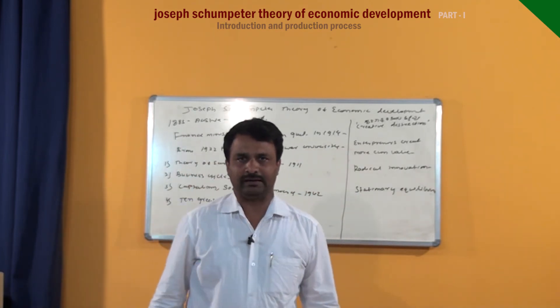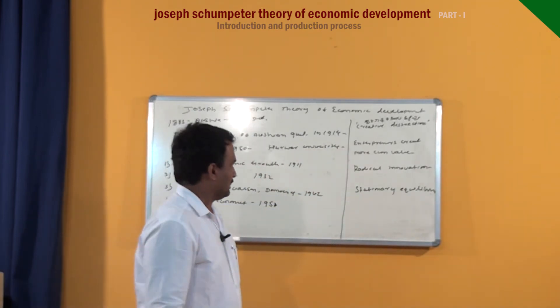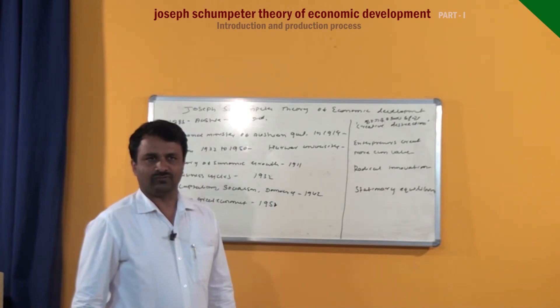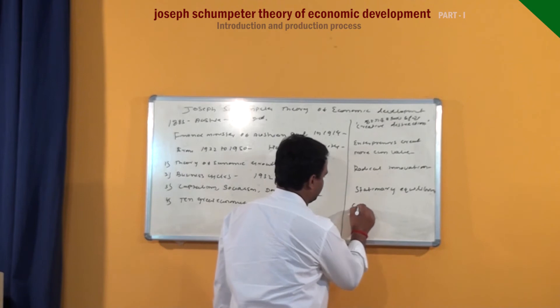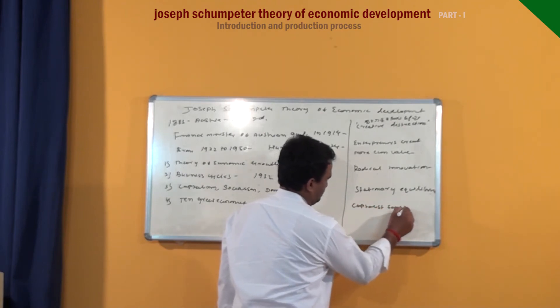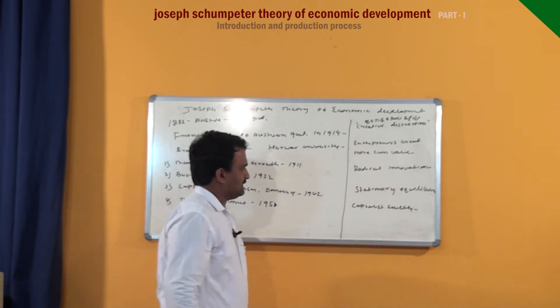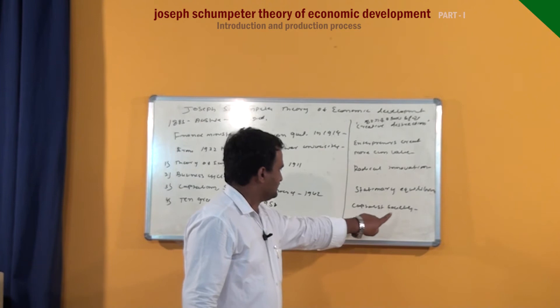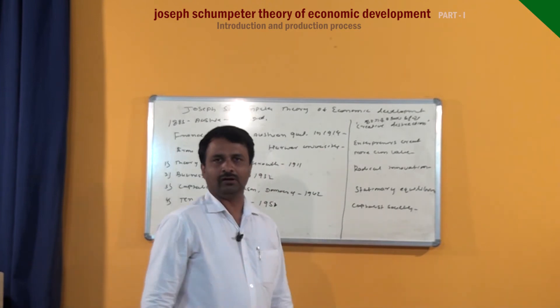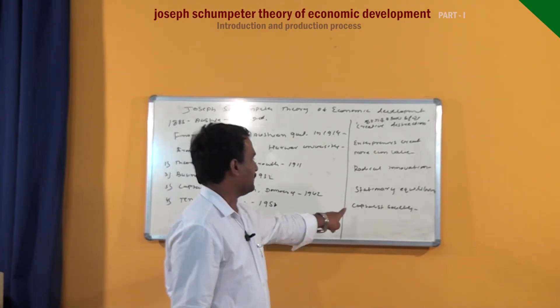Joseph Schumpeter was a great follower of Karl Marx and also a great admirer of the capitalist society. But there is a difference between Karl Marx's capitalist society and Joseph Schumpeter's capitalist society.